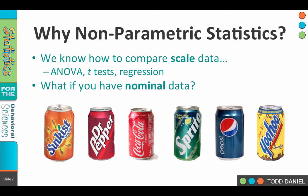But what if we had nominal data? Let's say I put forth six types of soda and asked which one you would prefer. Let's say we have a hundred or a hundred and twenty people. They would all choose their favorite, and at the end of that, what we would have are counts — how many people preferred the first type, how many preferred the second type. But we wouldn't have scale data; we would have nominal data based upon the type of soda.